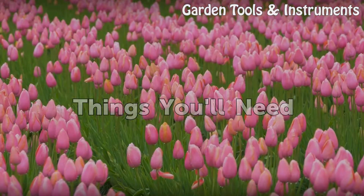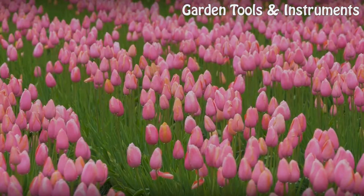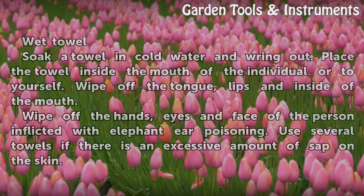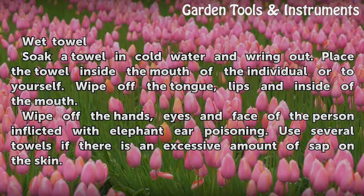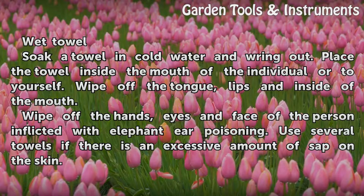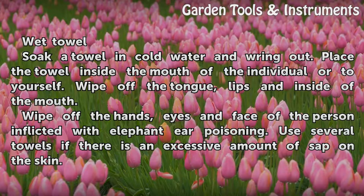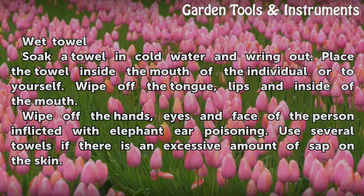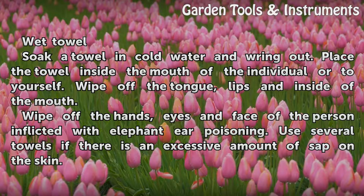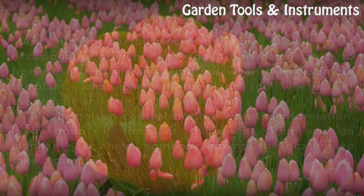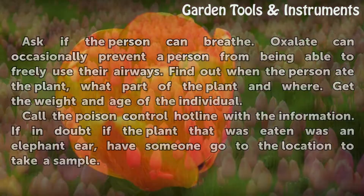Things You Will Need: a wet towel. Soak a towel in cold water and wring it out. Place the towel inside the mouth of the individual, or to yourself. Wipe off the tongue, lips, and inside of the mouth. Wipe off the hands, eyes, and face of the person afflicted with elephant ear poisoning. Use several towels if there is an excessive amount of sap on the skin.